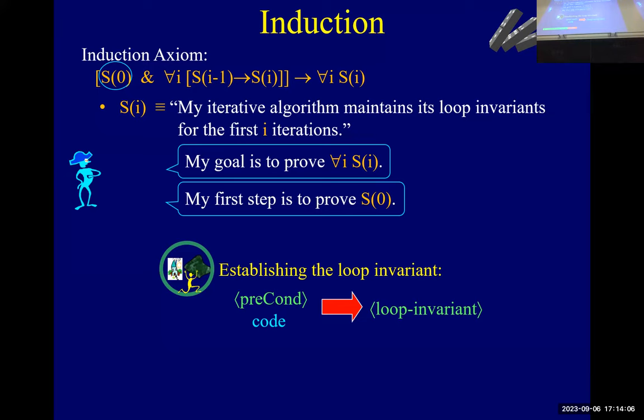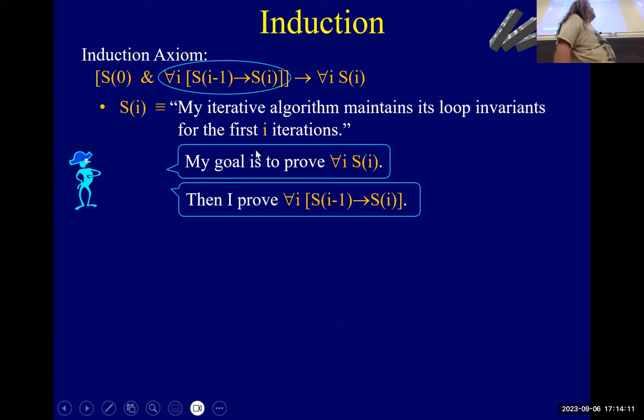And then we're going to prove this. We're going to prove for every I, if it's true for I minus one, then it's true for I, right? So how do you do that? Well, when I do logic, I don't think I recommend that, thank you.